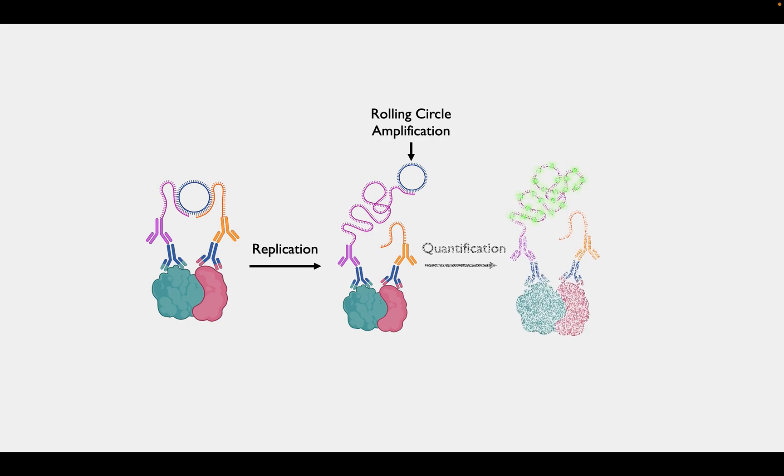The amplified DNA can then be quantified by QRT-PCR or visualized in situ using fluorescently labeled DNA probes via fluorescence microscopy. The successful connection and amplification of the PLA probes means that the proteins interact.